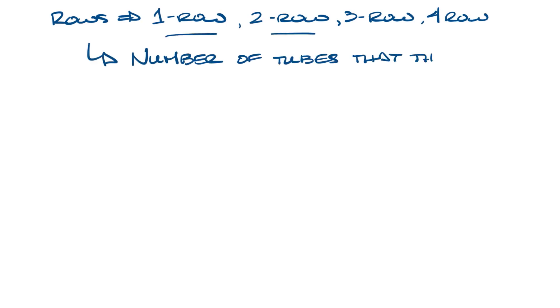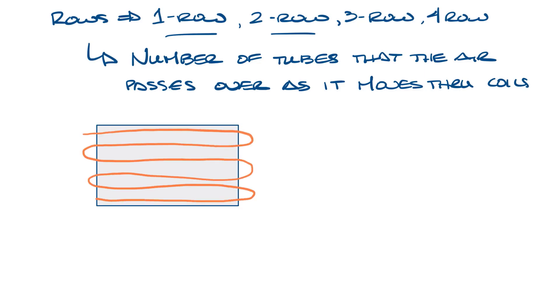You'll see water coils with one row, two row, three row, or four row on VAV boxes, and one and two row are the most common. Rows refer to the number of layers of tubes that the air passes over as it moves through the coil. The supply comes into the bottom, and the return is at the top of the water coil, and this pushes the air out of the coil.